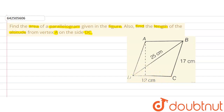Let's call the foot of the altitude point E, so we are supposed to find the length AE. DC is 12 cm. First, we are going to find out the area of the parallelogram.